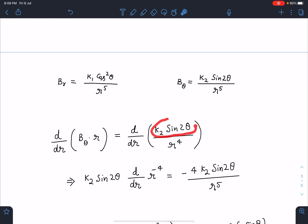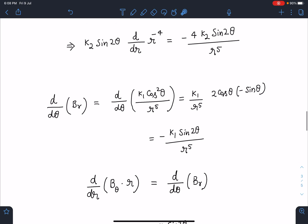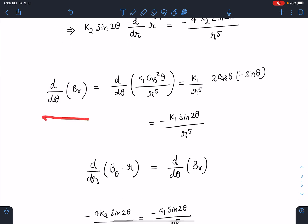Since we are differentiating with respect to r, this theta I am taking as constant. So k2 sin 2 theta d by dr of r to the power minus 4, which is going to give me minus 4 k2 sin 2 theta by r to the power 5. Similarly, d by d theta of B_r, when I substitute B_r value k1 cos squared theta by r to the power 5, this becomes k1 by r to the power 5 times 2 cos theta times minus sin theta.